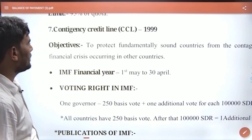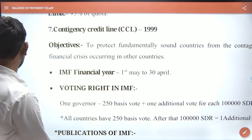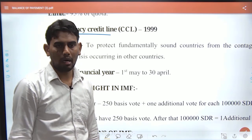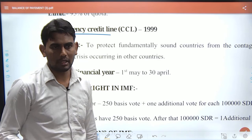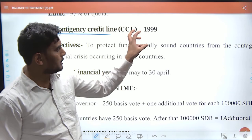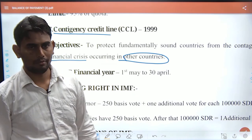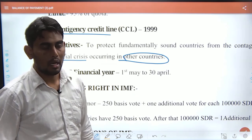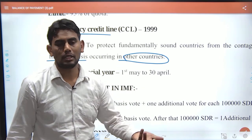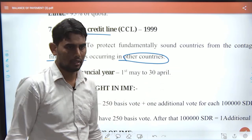The Contingency Credit Line was introduced in 1999. India is considered a sound country. This facility was used during the COVID situation and global financial crises. The 2006–2007 global recession and 2010 crisis impacted many countries, though India's impact was limited.